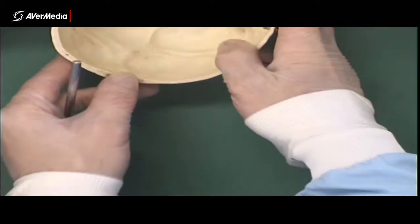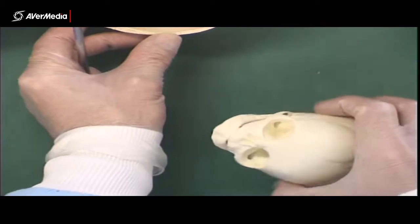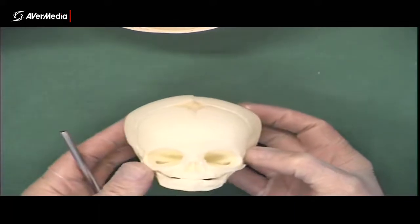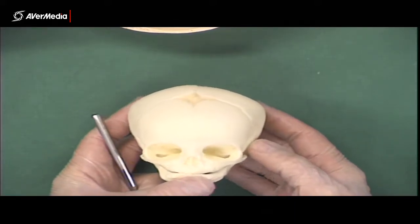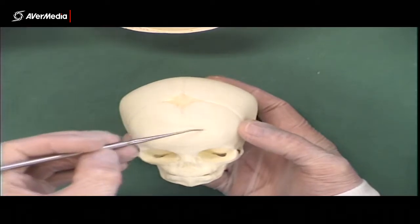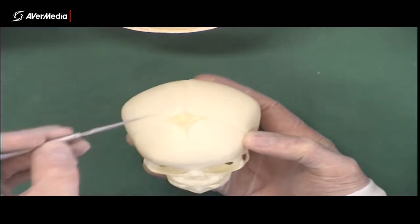Then, if we have a look at this little fetal skull model, we can see frontal bone here, still in two parts, and we can see parietal bones here.